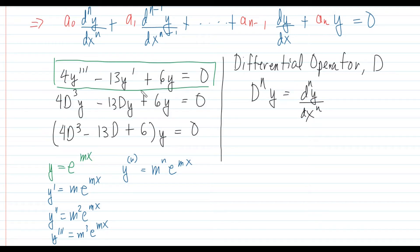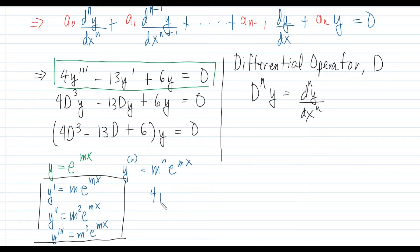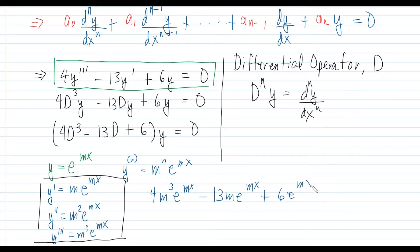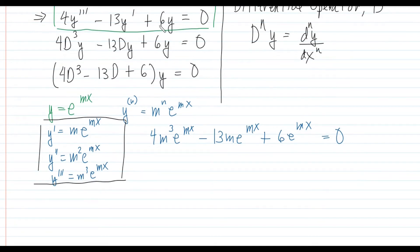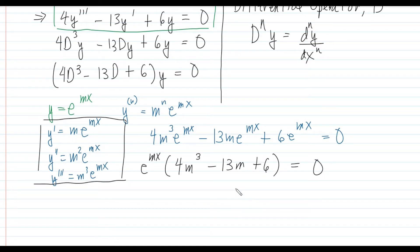Now let us substitute these derivatives into our given equation. We have 4y triple prime, so 4·m³·e^(mx), minus 13y prime, so minus 13·m·e^(mx), plus 6y, so plus 6·e^(mx), equals 0. We can factor out e^(mx), and it becomes: e^(mx) times (4m³ minus 13m plus 6) equals 0.